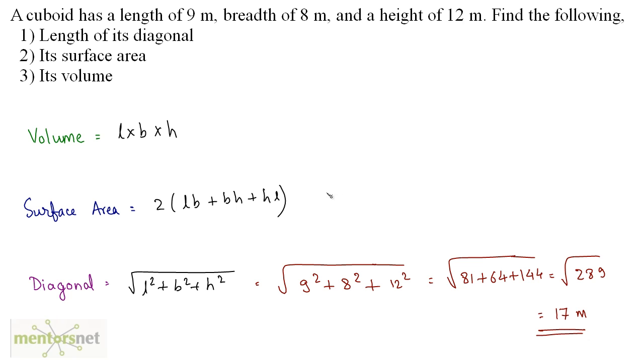Let's calculate the surface area now. This will be twice of LB plus BH plus HL. So we have twice of 9 times 8 plus BH, so 8 times 12 plus HL, so we have 12 times 9.